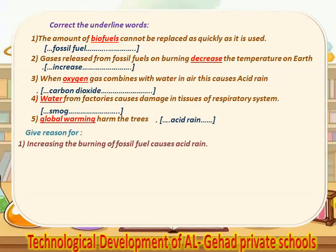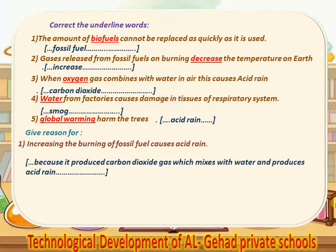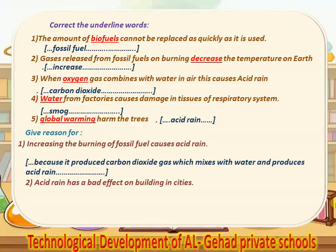Give reason. Number 1, increasing the burning of fossil fuel causes acid rain — because it produces carbon dioxide which mixes with water and produces acid rain. Number 2, acid rain has a bad effect on buildings in cities — because it dissolves the rocks of the building.